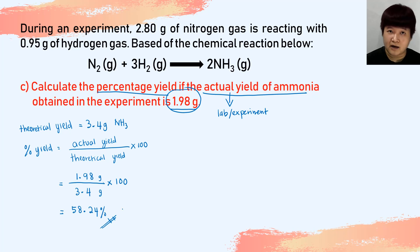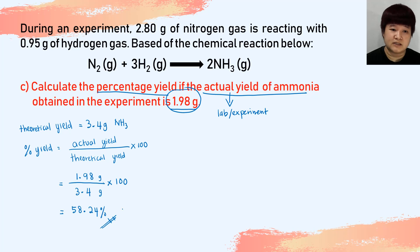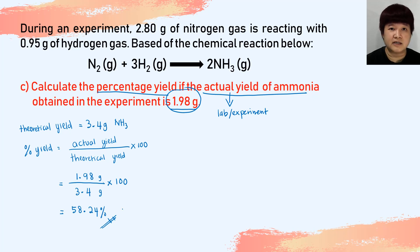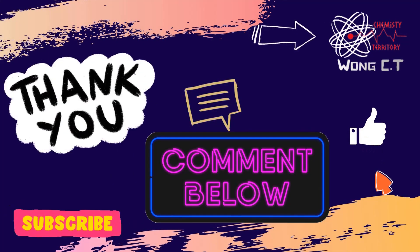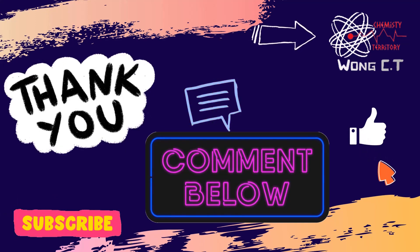By now I hope you understand what a limiting reactant is, what theoretical yield, actual yield, and percentage yield are. That's it for this video, and I will see you again in the next topic. Thank you for watching.